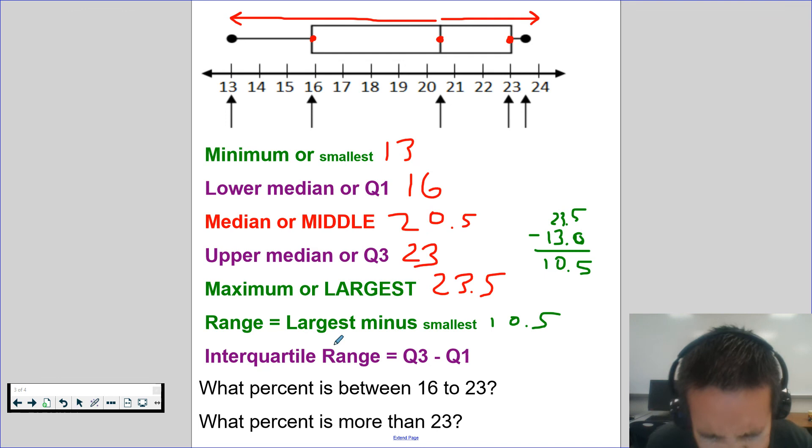Interquartile range means the middle 50% of it. So that is Q3 minus Q1. So it's 16 to 23. How far is it from 16 to 23? 1, 2, 3, 4, 5, 6, 7. Or 23 minus 16, which equals 7.